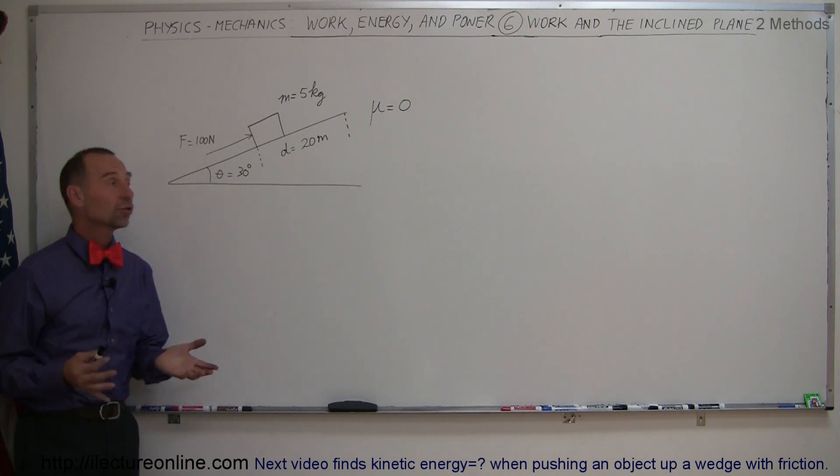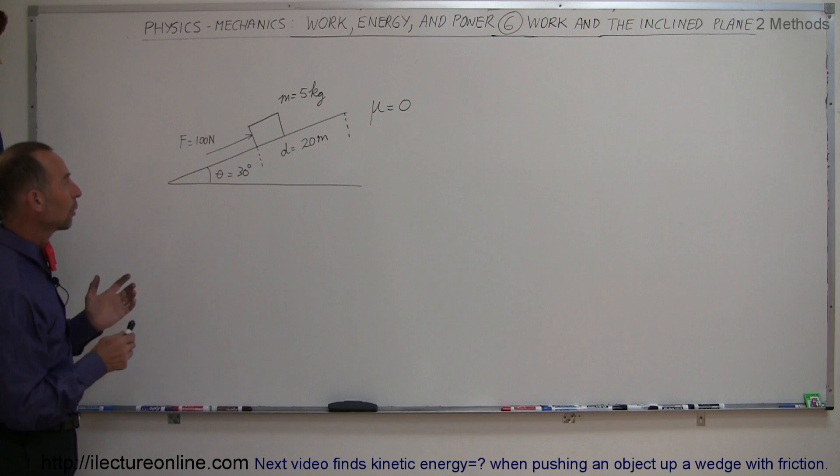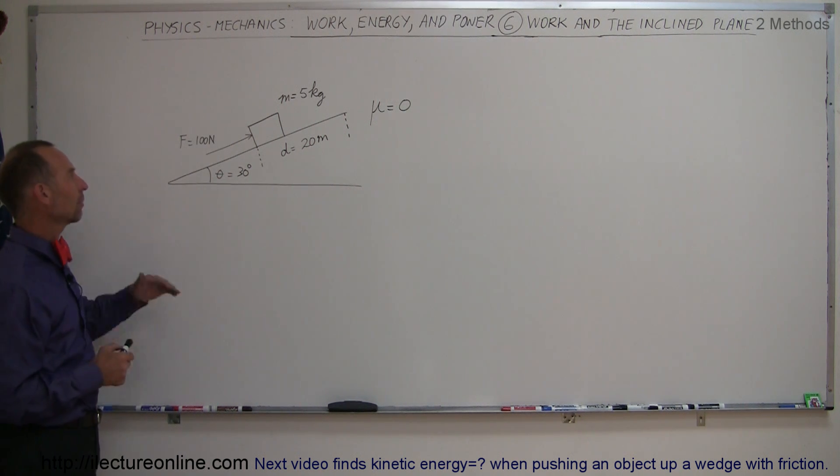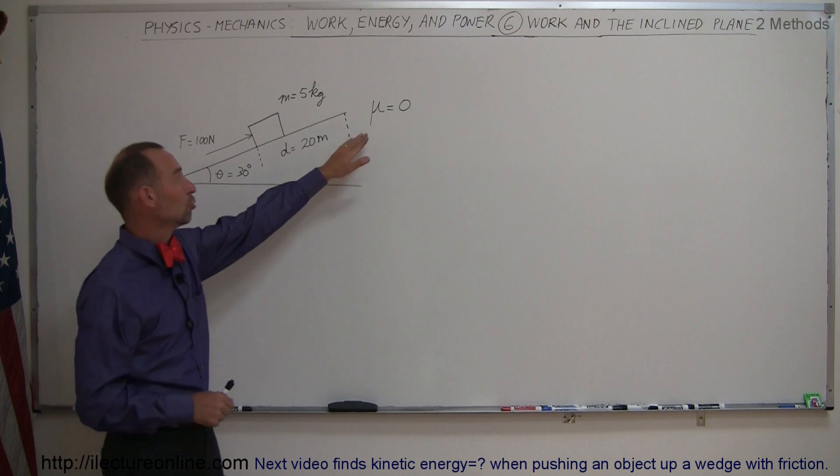All right, in this example on work and energy, again power will be done at a later video, we're going to look at the incline plane. We have an object, let's say mass 5 kilograms, being pushed up an incline plane of 30 degrees with a force of 100 newtons over a distance of 20 meters, and in this case there's no friction.